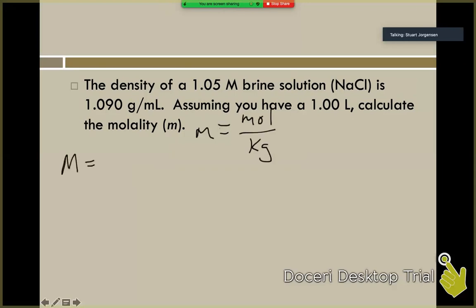We know the molarity. Molarity big M equals moles of solute per liters of solution. Okay. Well, we know it's a one liter solution. We know the molarity is 1.05. 1.05 molar is going to equal some amount of moles, which we don't know. We've got a one liter solution, technically 1.00 liters for three sig figs. Cool. That tells us that for this particular solution, we've got 1.05 moles of our solute.